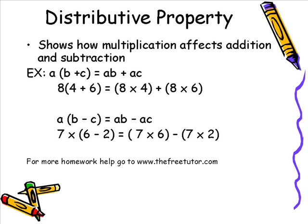Then we have the distributive property of multiplication, which shows how multiplication affects addition and subtraction. We have two examples. First: A times (B plus C) equals A times B plus A times C. With numbers: 8 times (4 plus 6) equals 8 times 4 plus 8 times 6. Another example: A times (B minus C) equals AB minus AC. With numbers: 7 times (6 minus 2) equals 7 times 6 minus 7 times 2. If you're not familiar with these, I encourage you to stop the video and review them one at a time.